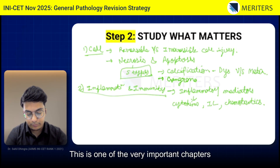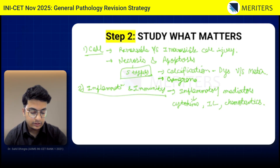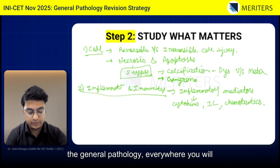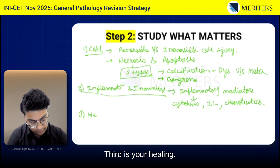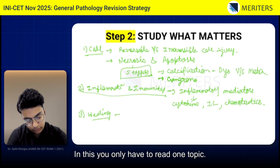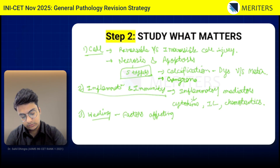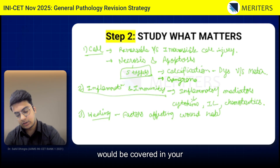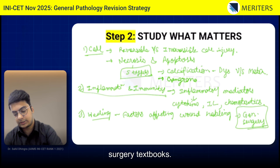This is one of the very important chapters for both INICT and NEET MDS. You can club it across periodontology, microbiology, and general pathology — questions on inflammation and immunity appear everywhere. Third is Healing. In this chapter, there is only one topic: the factors affecting wound healing. This wound healing part will also be covered in your general surgery, so you can either do it here or get it in more depth from your general surgery textbooks.